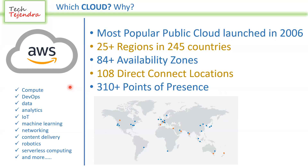AWS services span compute, DevOps, data analytics, Internet of Things, machine learning, networking, content delivery, robotics, and serverless computing. Overall, AWS is a very good and stable cloud service provider.